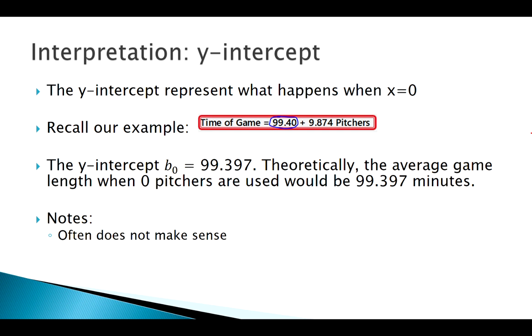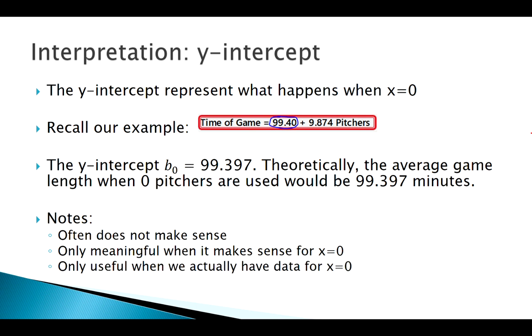Here in this example, it doesn't make a ton of sense because if we use zero pitchers, there wouldn't be a game, right? So it doesn't make sense to say a game is going to be 100 minutes with no pitchers. It's really only meaningful when it could make sense for x to be zero, and it's really only useful when we actually have data for what happens when x is zero.